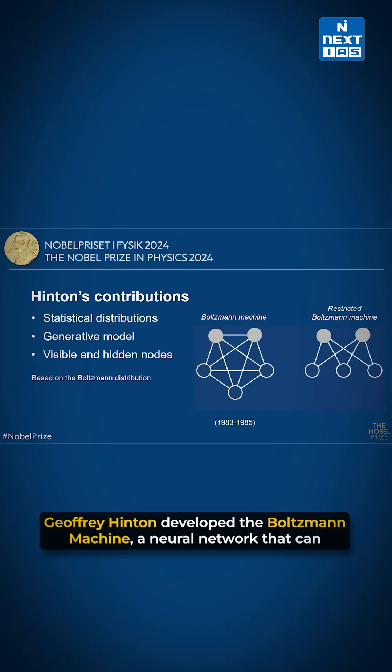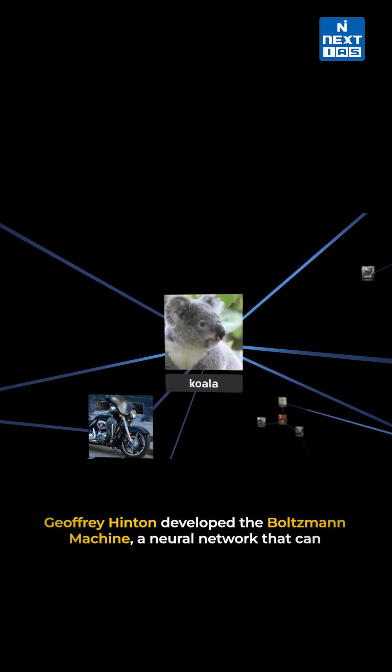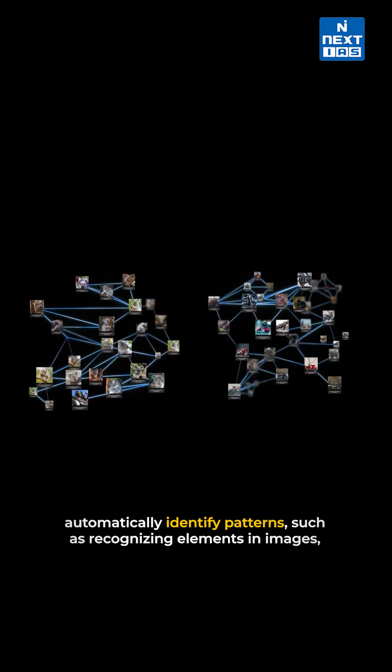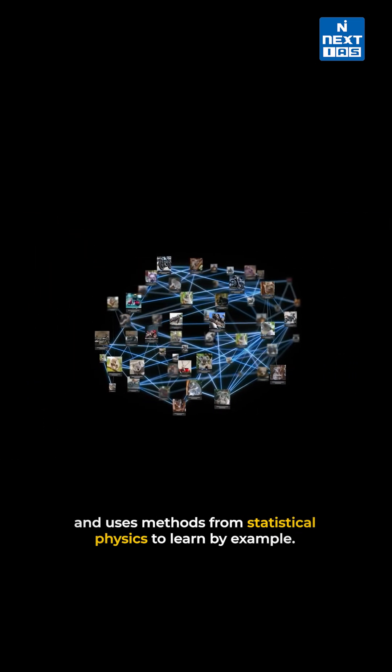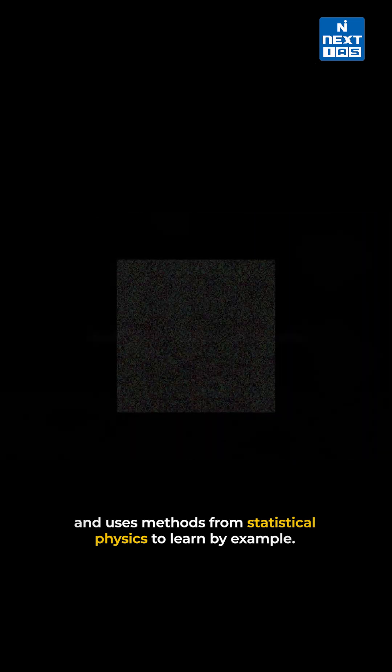Jeffrey Hinton developed the Boltzmann Machine, a neural network that can automatically identify patterns such as recognizing elements in images and uses methods from statistical physics to learn by example.